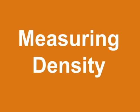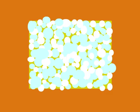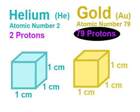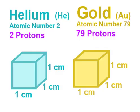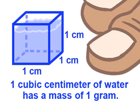Measuring Density. Density is the amount of matter, or mass, in a volume. There is more mass in a cubic centimeter of gold than there is in a cubic centimeter of helium. And it just so happens that a cubic centimeter of water has a mass of exactly one gram.